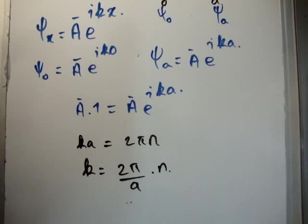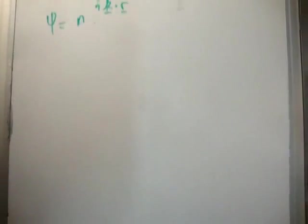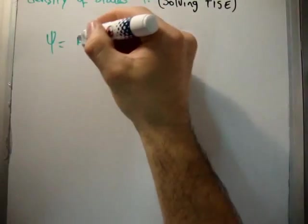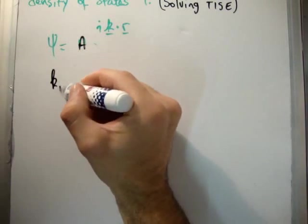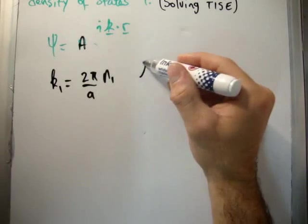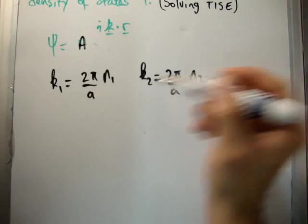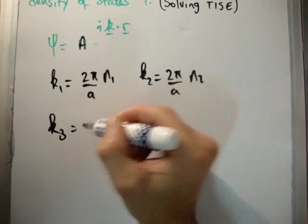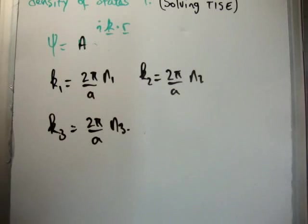So now that means that for each dimension, and we have 3, we have a different k value and a different n value. So just going back to here, that means we have the following. We have k1 is equal to 2 pi over a times n1, k2 is equal to 2 pi over a times n2, and k3 is equal to 2 pi over a times n3. Or if you can think about it as x, y, and z, if you like.